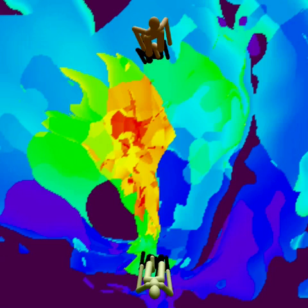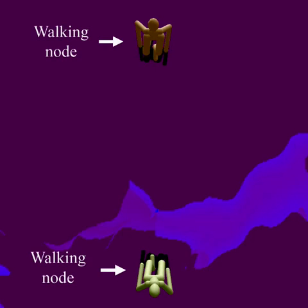Even our simple motion model gives rise to a surprisingly rich structure for this non-determinism, which would be very difficult to encode by hand. Our method does this fully automatically, and also captures how this changes if the characters are facing at different angles. It also automatically determines, for instance, that when the characters are walking, they are moving too slowly for non-determinism to be of any use.